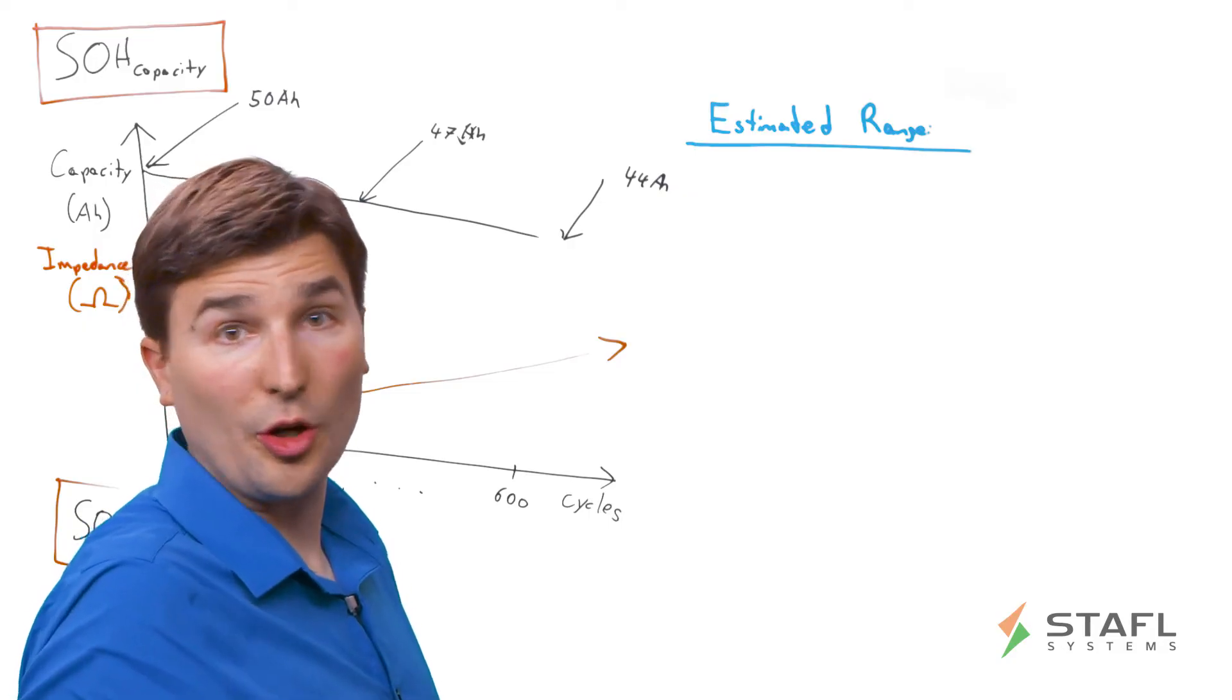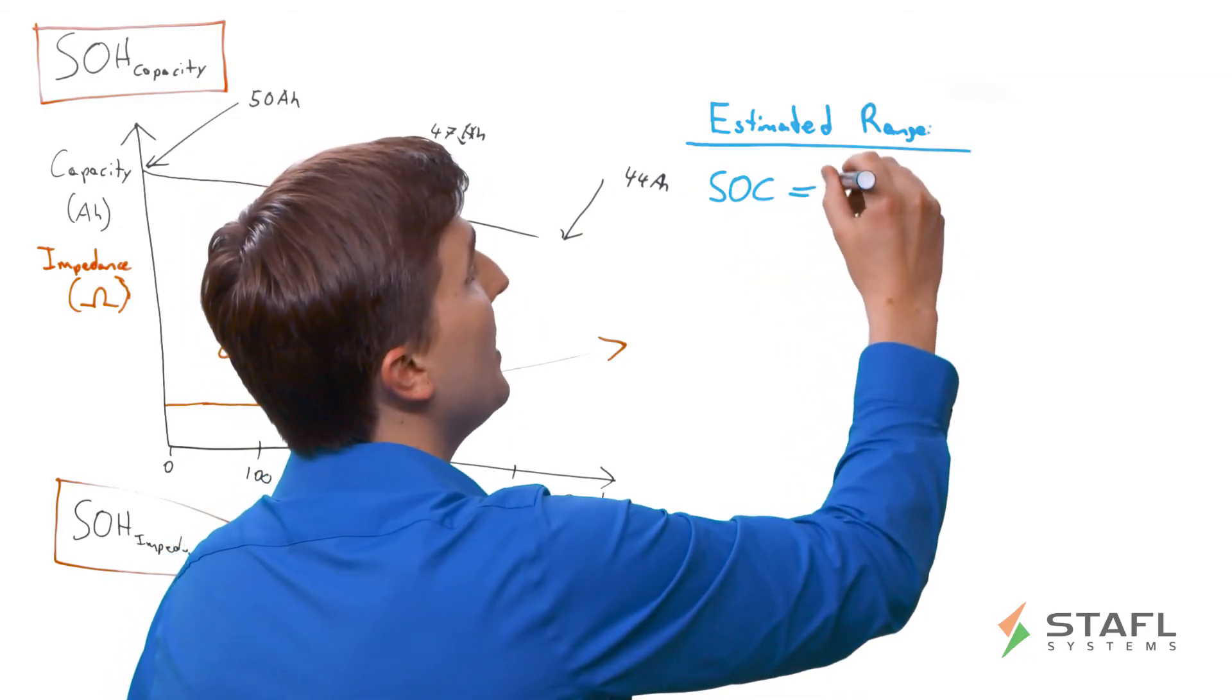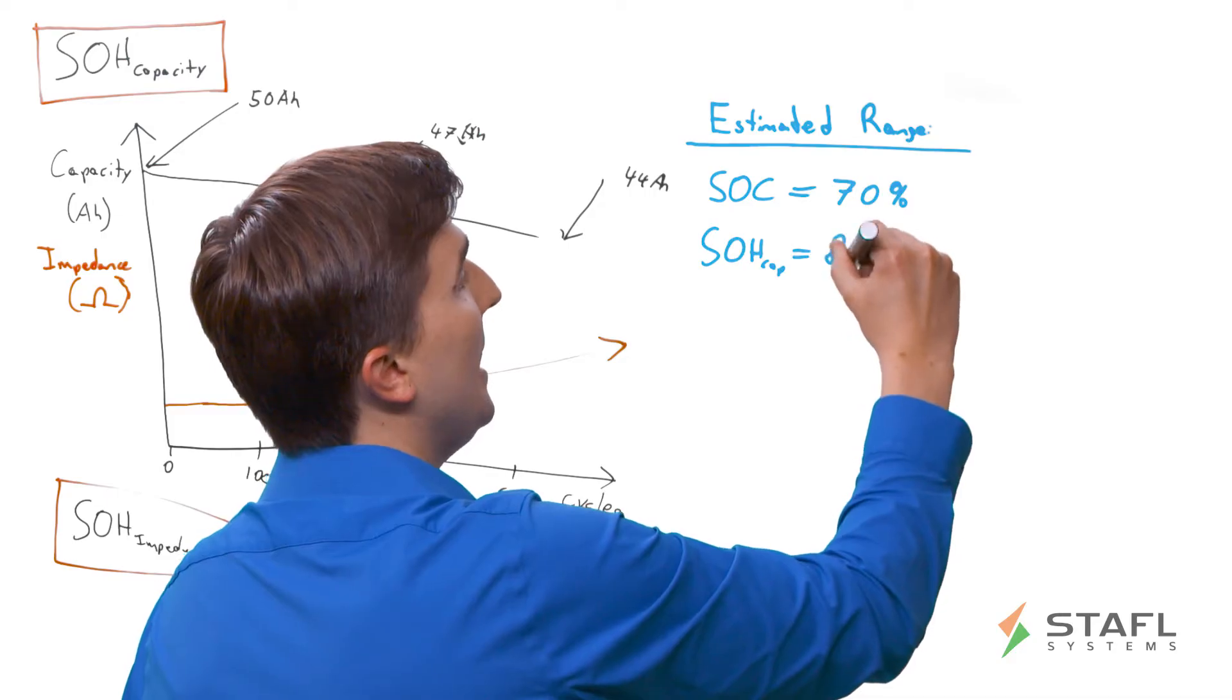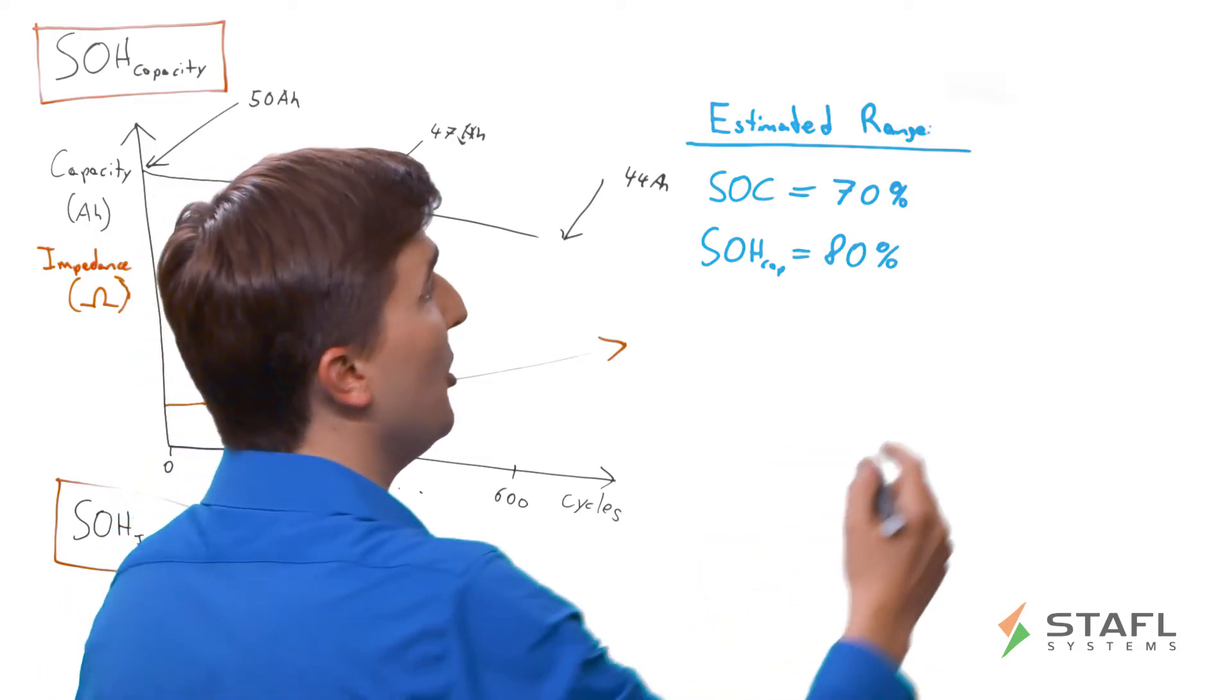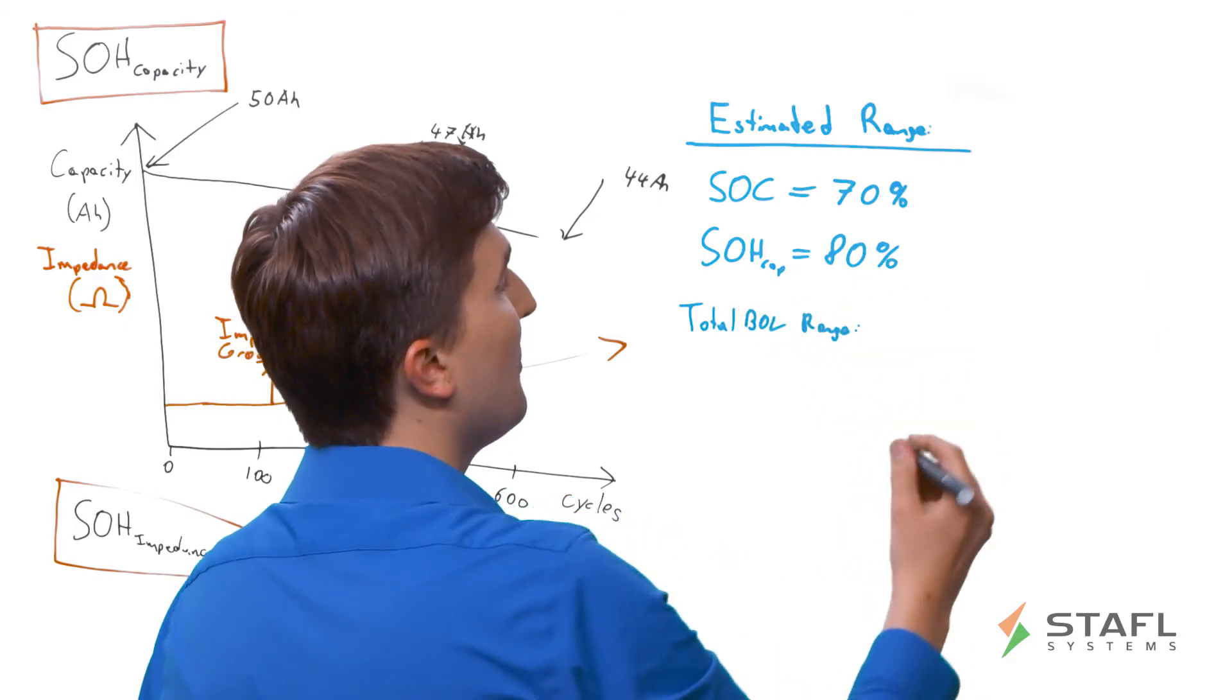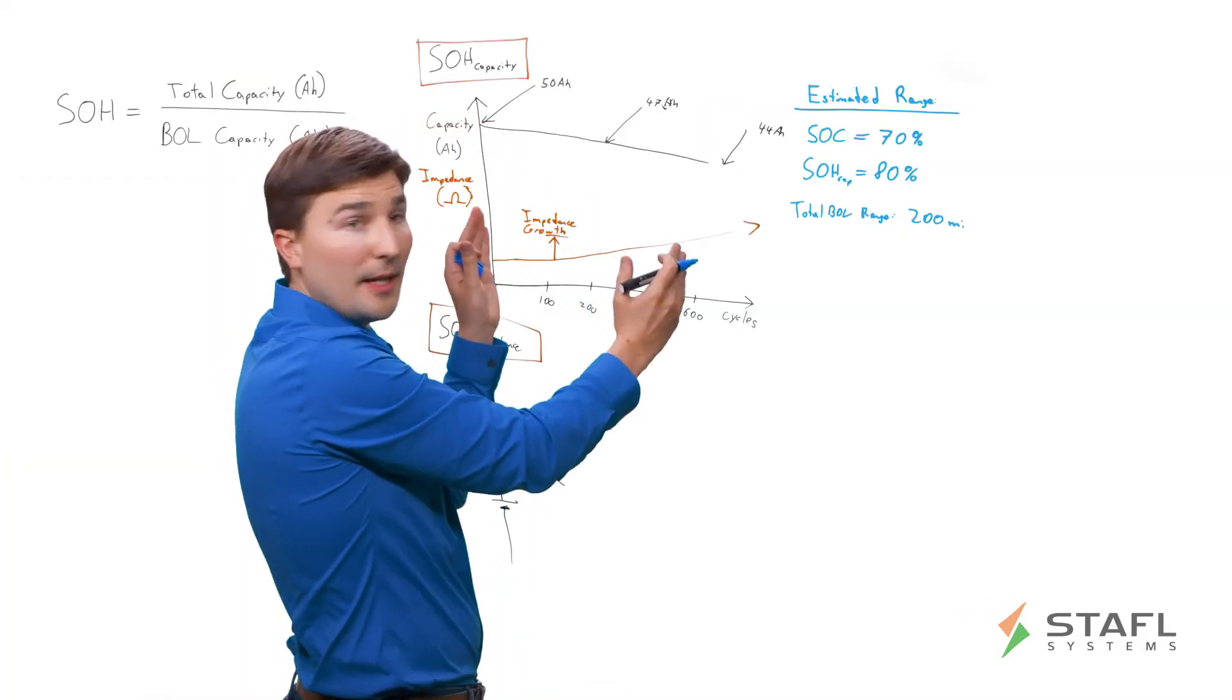In a previous video, we discussed state of charge. So, say for a simple approximation, we want to say the state of charge of the system is 70% and the state of health capacity of the system is 80%. And when the vehicle was initially purchased, when the battery was brand new, we had a total BOL range of, say, 200 miles. So what is the total range of the vehicle now that it's aged due to the capacity fade effect?